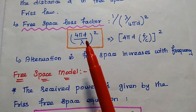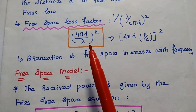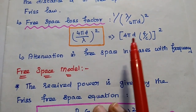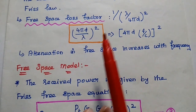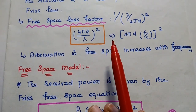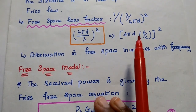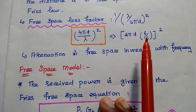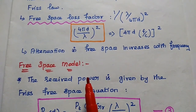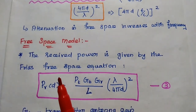The free space loss factor can be represented as (4πD / λ)². Since λ = c / f, we can write this expression as (4πDf / c)². From this, we can see that the free space loss factor — that is, attenuation in free space — is directly proportional to frequency. If frequency increases, the loss also increases. So attenuation in free space increases with frequency.